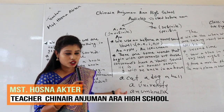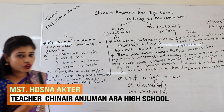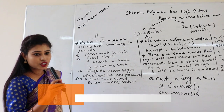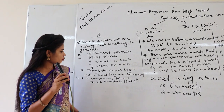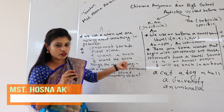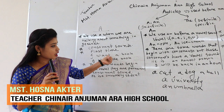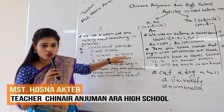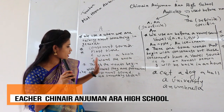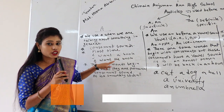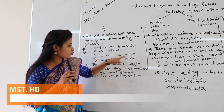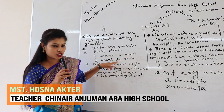We also use 'a' when we are talking about something for the first time. For example: 'I want a book' — 'I want the book.' In the first sentence we use 'a' before the noun 'book' because we are using it for the first time. But in the second sentence we use 'the' because we are using the same word 'book' for the second time.